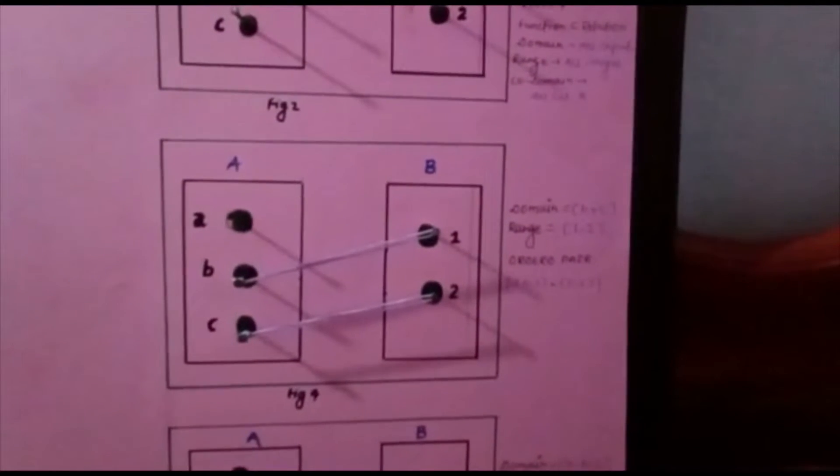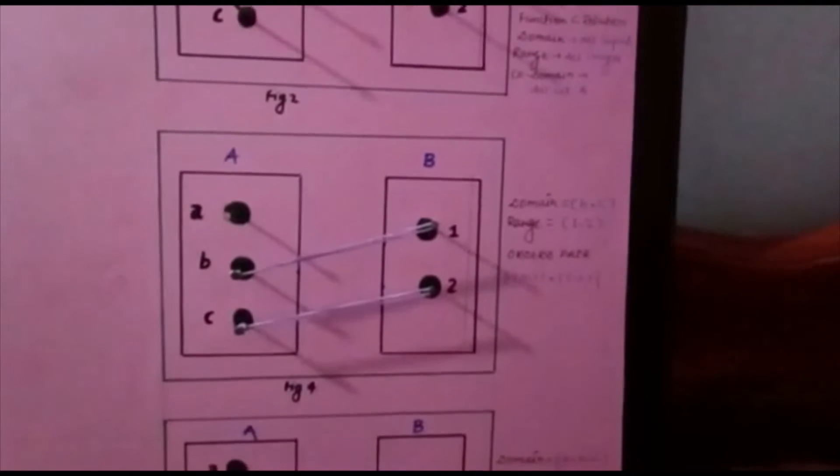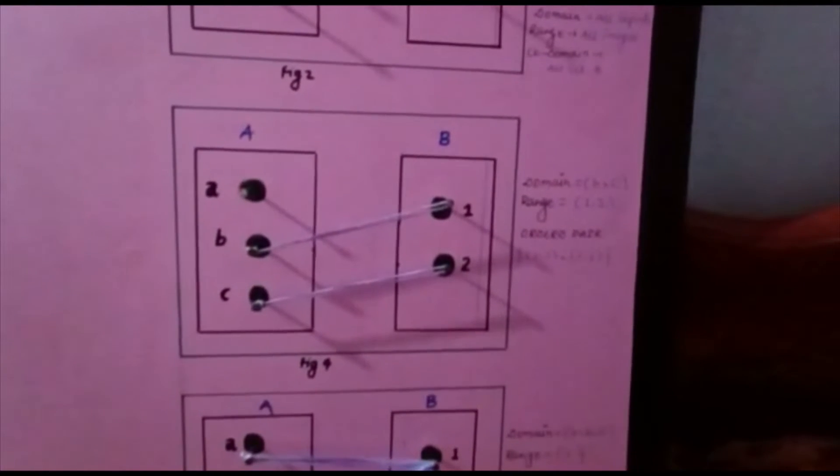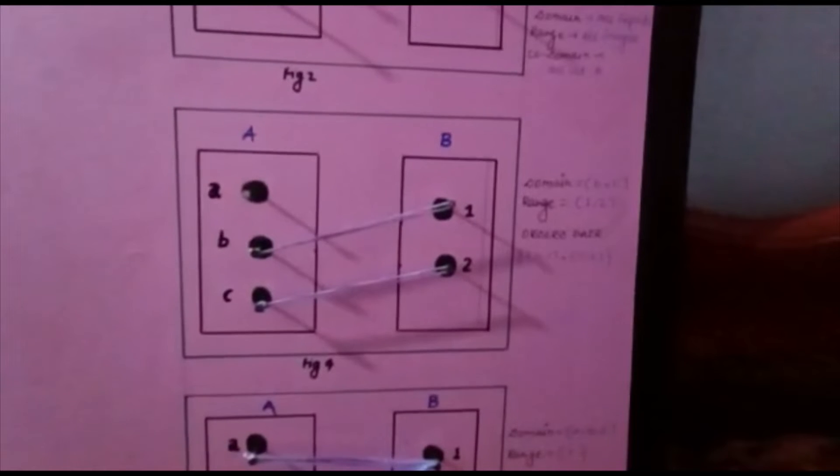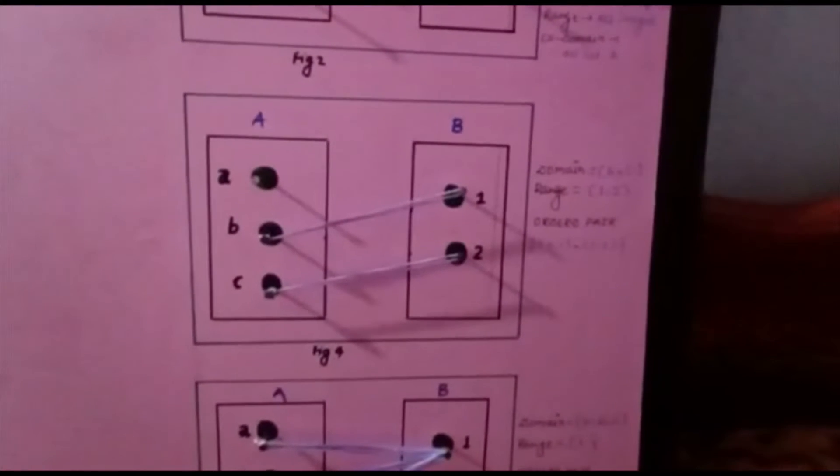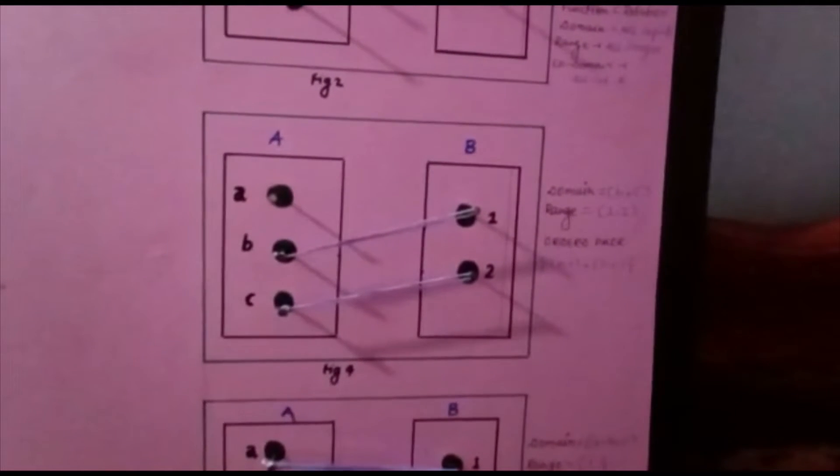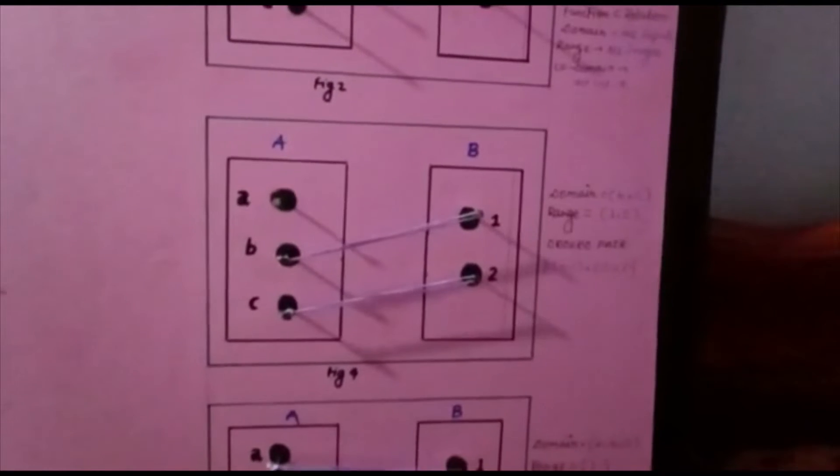Let us take another example as shown in figure 4. Two elements in set A have images in set B. So, it is also both a relation and a function. Its ordered pairs are (B,1) and (C,2). Its domain is {B, C} and range is {1, 2}.